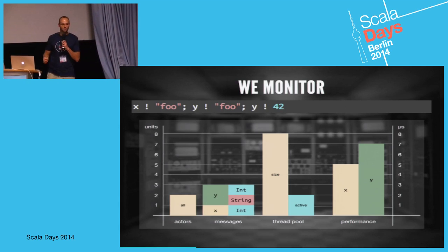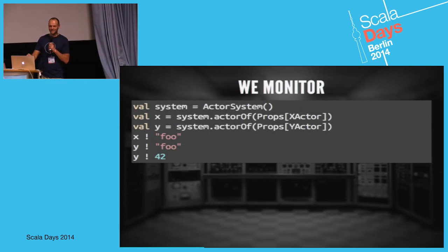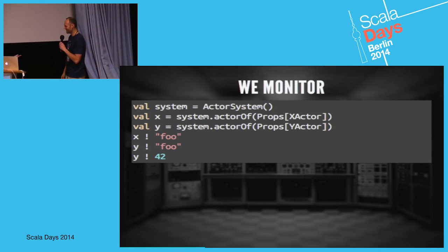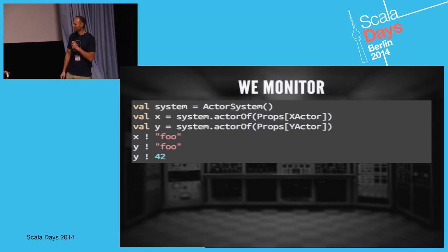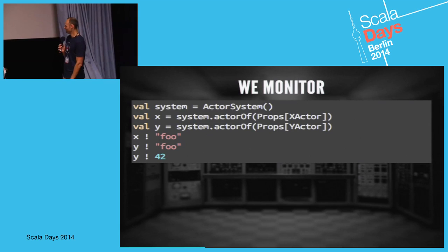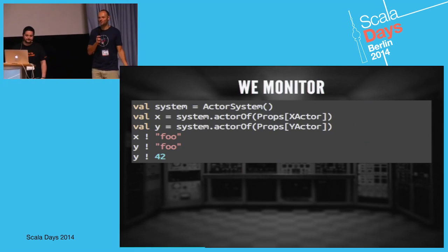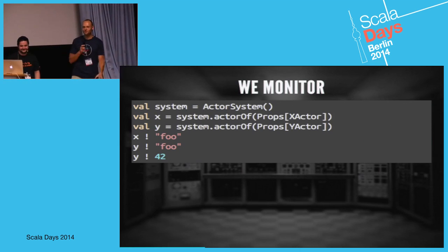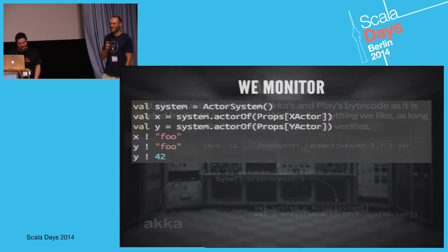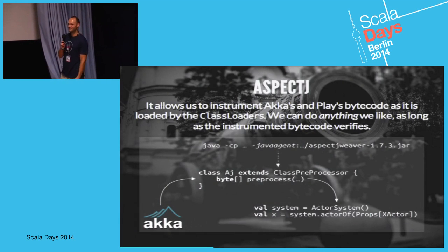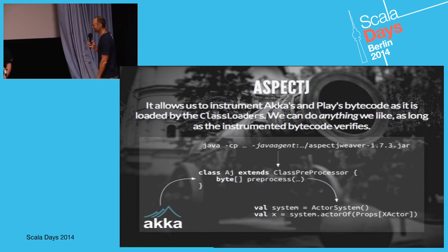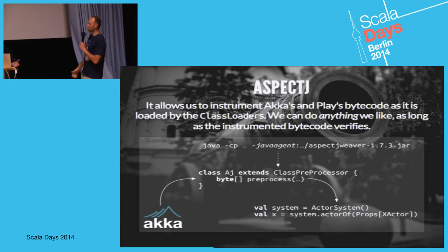By that point we'd already written a lot of code, and we wanted to keep it exactly the same - we didn't want to litter the source with monitoring code. The source was tested; we didn't want to touch it. So macros to the rescue? No - we used something worse, the evil twin of a macro. We used AspectJ. Anyone heard of AspectJ? For those who haven't, let's walk through it.